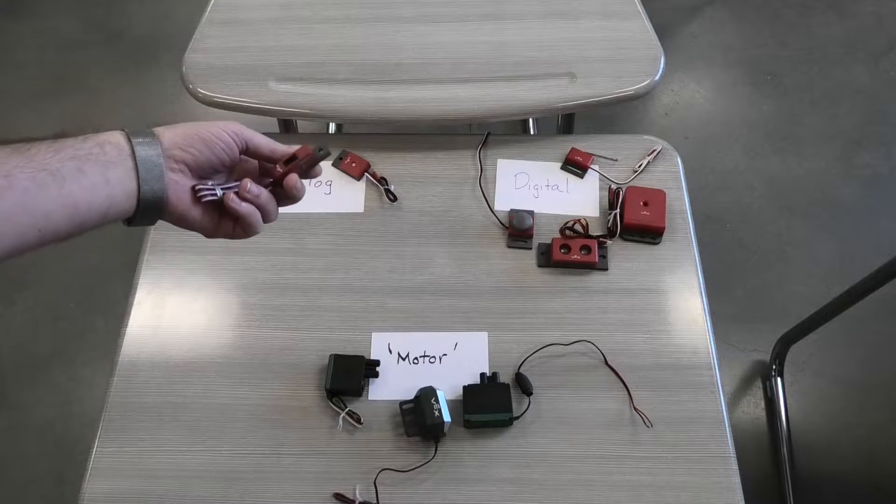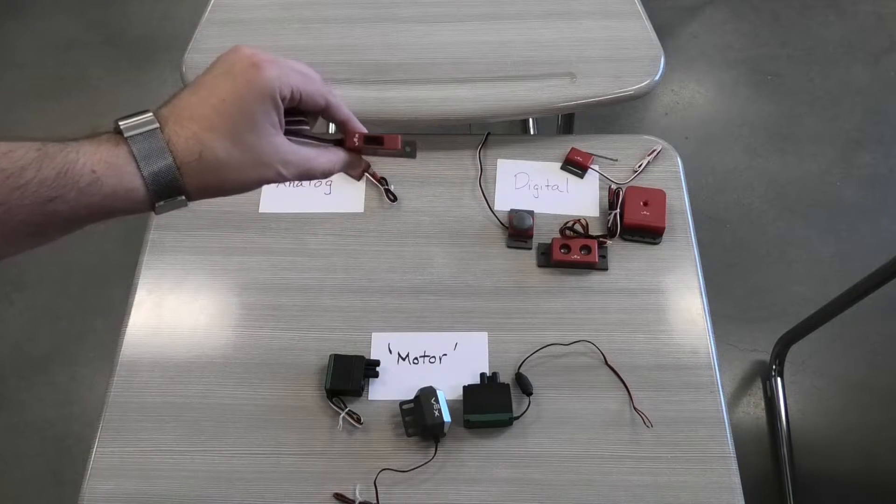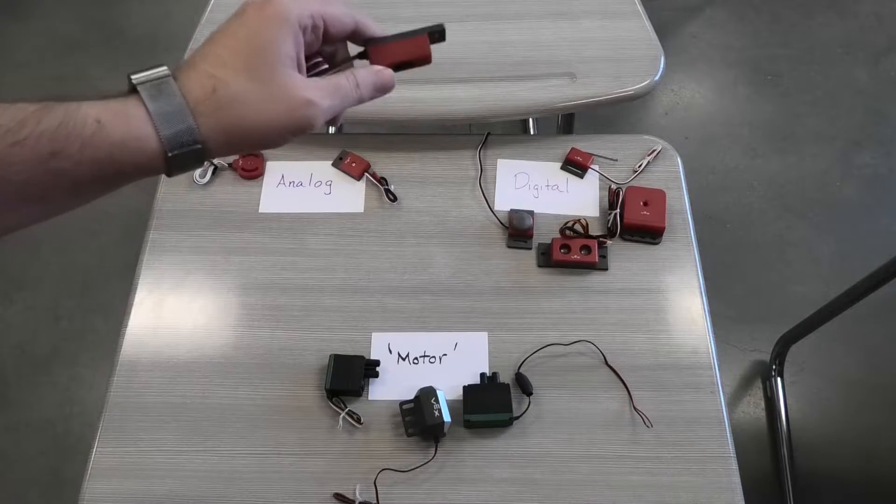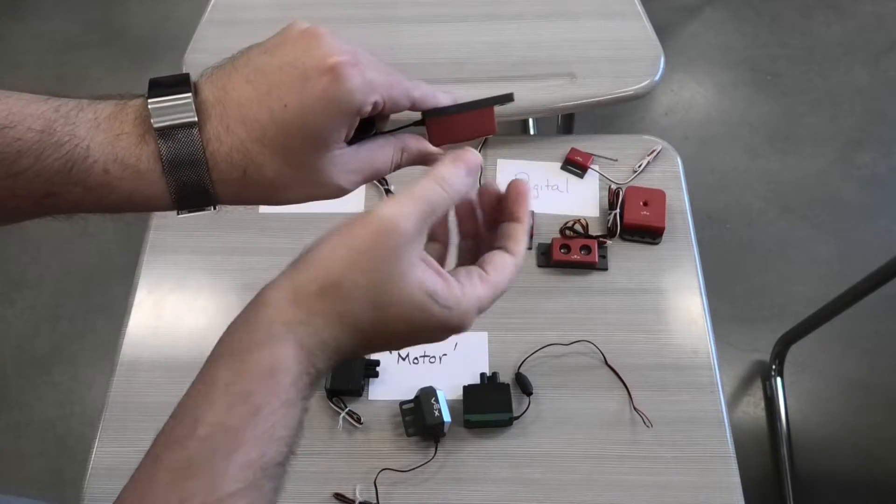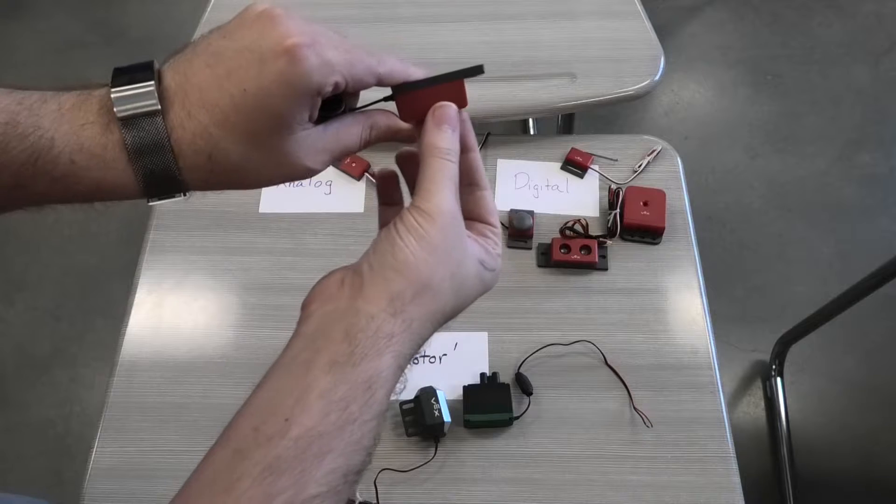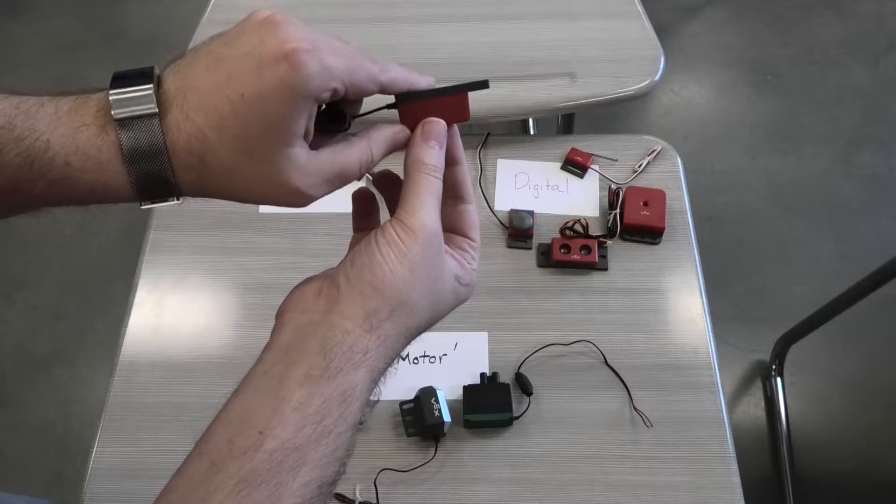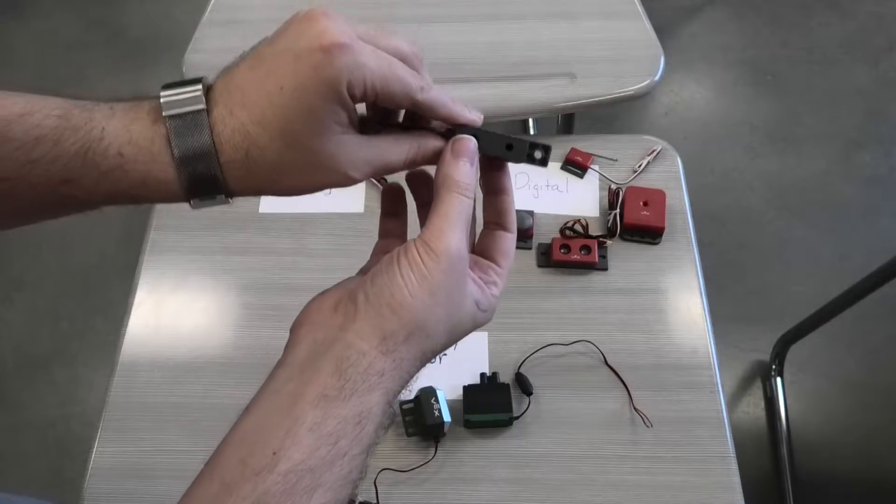Let's talk about the analog ones first. These plug into the analog sensor ports on the Cortex. This one is a line tracker or line follower. It's got a sensor right here. You want to make sure that you put this really close to a surface, and it will follow different color variations. Usually you want to use like a bright piece of tape or something, and you can program it to follow those lines.